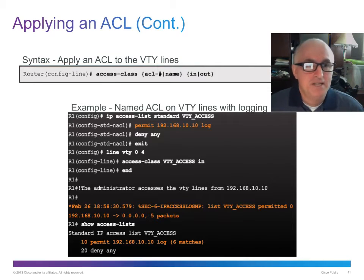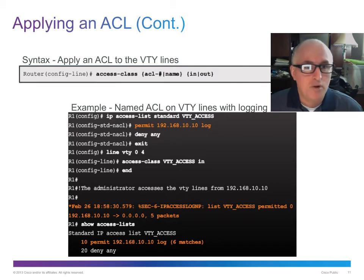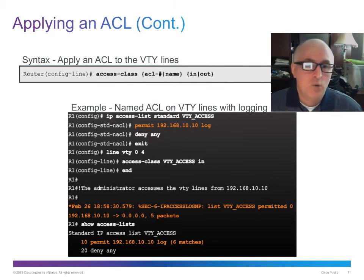Using the access-class command, we can apply an access list to our VTY interface. It's 'access-group' when it's a physical port interface, and 'access-class' when it's going on a VTY interface.